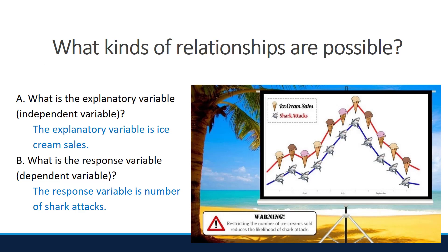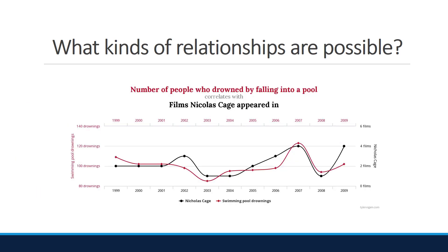Sometimes it's easy to determine that there's no causation. Consider this plot making a comparison between the number of films that Nicolas Cage has appeared in and the number of people who have drowned in a swimming pool. Notice that these two variables have a similar pattern over time. Thinking rationally, it's obvious that the number of films Nicolas Cage appears in has nothing to do with the number of drownings.